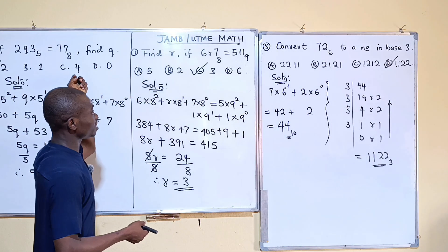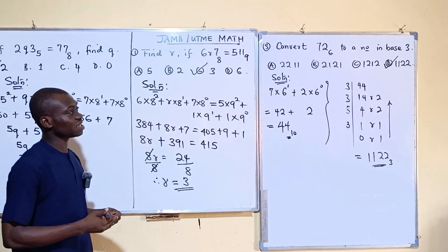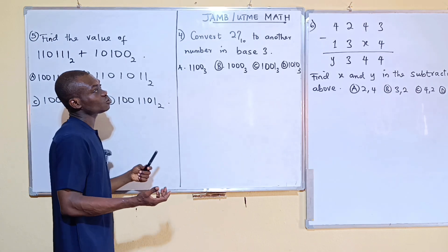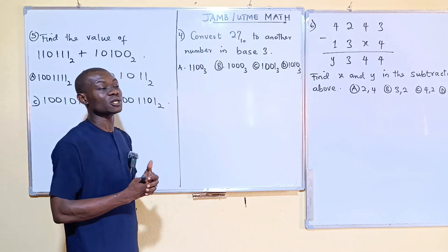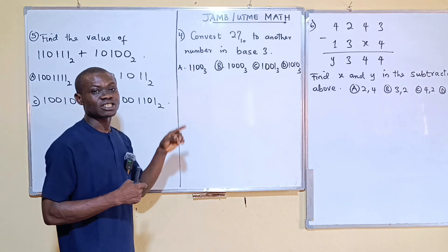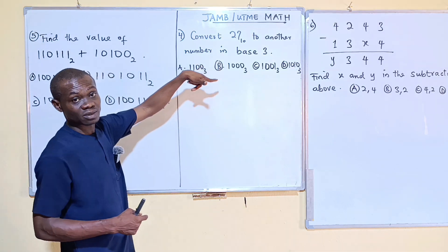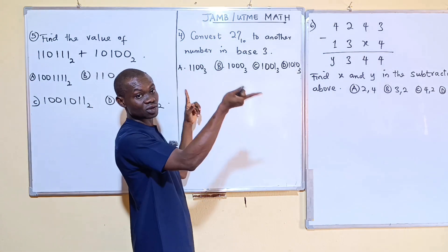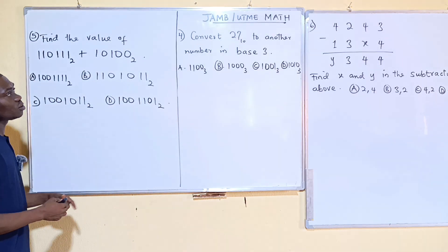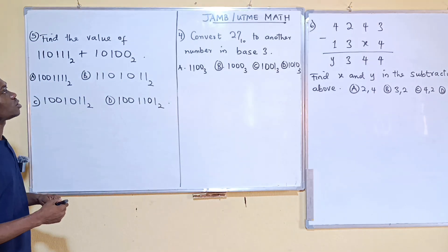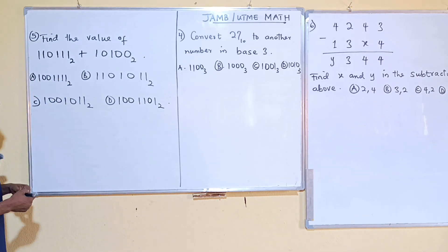Question 4 says: convert 27 base 10 to a number in base 3. I'll leave this as an exercise, since we did something similar in question 3. You should be able to do this — leave your solution for question 4 in the comment section.